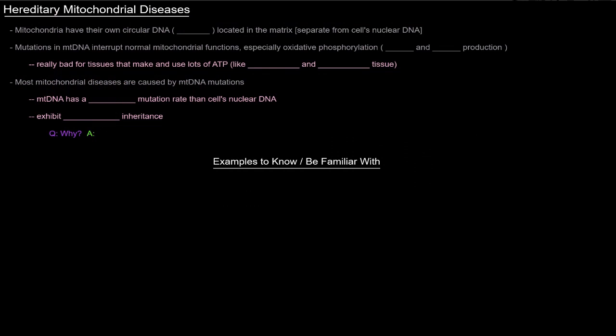In this video I want to talk about hereditary mitochondrial diseases. The mitochondria have their own circular DNA, which is mitochondrial DNA represented as mtDNA, and it's located in the matrix of the mitochondria. This DNA is separate from the cell's nuclear DNA.